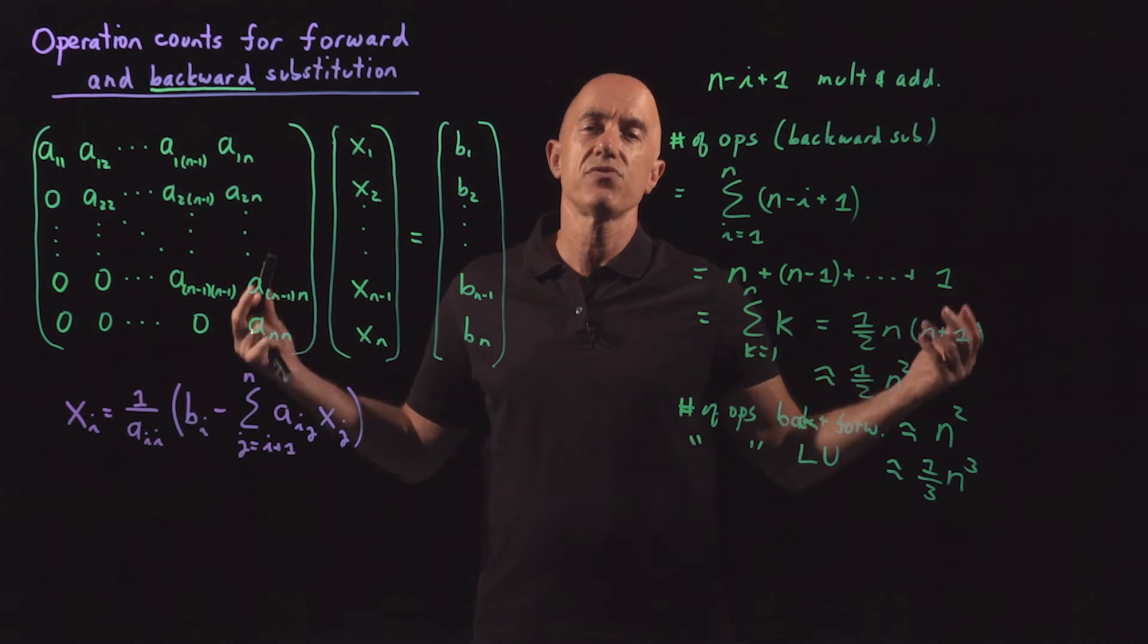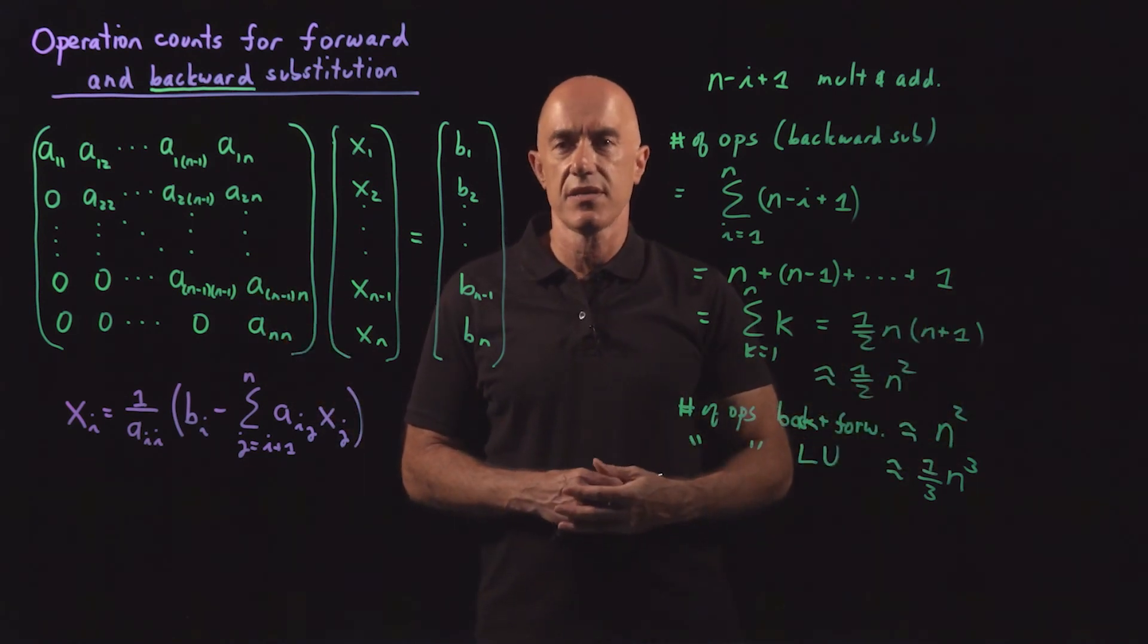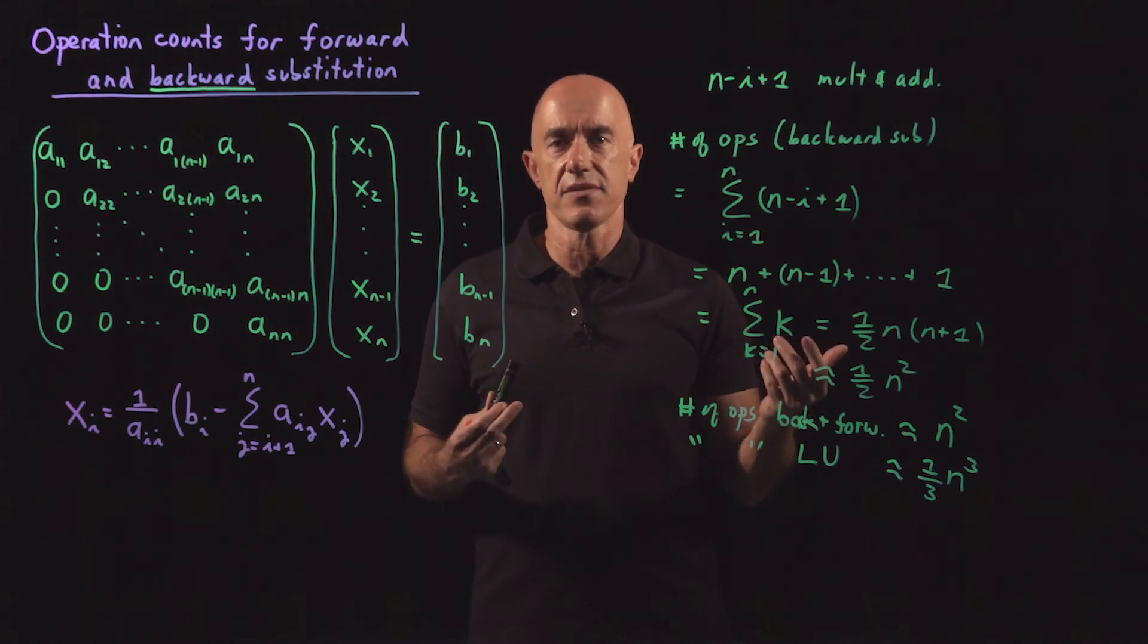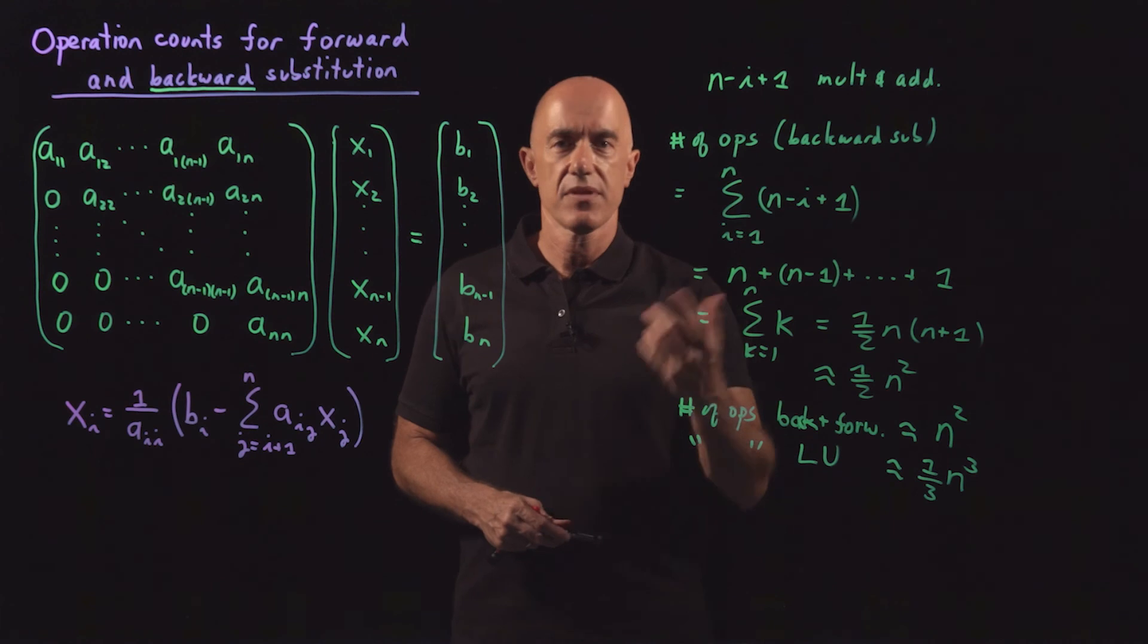Okay? So 300 times. That's a big number. If it was a 10,000 matrix, a 10,000 by 10,000 matrix, it would take 3,000 times longer. Okay? That's a big deal.